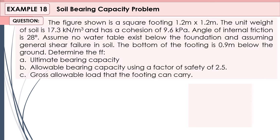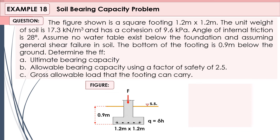Let us try to solve an example for soil bearing capacity. The figure shown is a rectangular footing 1.2 meters by 1.2 meters. The unit weight of the soil is 17.3 kN/m³ and has a cohesion of 9.6 kPa. The angle of internal friction is 28 degrees. Assume no water table exists below the foundation and assume general shear failure. The bottom of the footing is 0.9 meters from the ground surface. Determine: the ultimate bearing capacity; the allowable bearing capacity using a factor of safety of 2.5; and the gross allowable load the footing can carry.